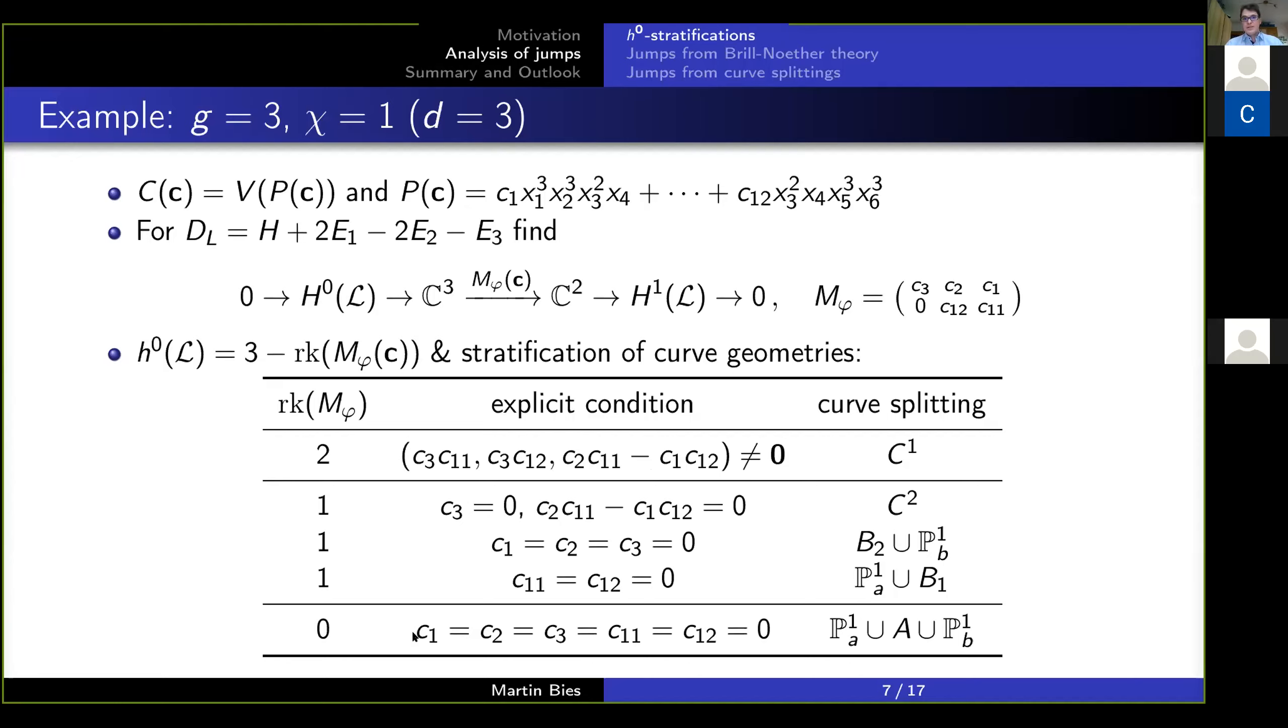And given that you have this list here, you can take these conditions here, let's say this one, c_1, c_2, c_3, c_11, c_12 equals zero, and you plug it into this polynomial. You ask Mathematica, please factor this for me, and it turns out, we factor off one P^1, another P^1, and we have this remainder piece. Likewise, for up here, we factor off one P^1 here, another P^1 here, and here we actually leave the curve unchanged.